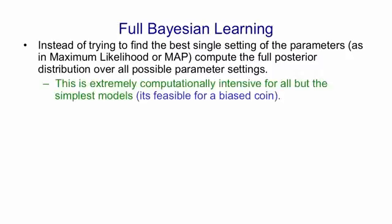It's extremely computationally intensive to compute this for all but the simplest models. So in the example earlier we did it for a biased coin which just has one parameter which is how biased it is. But in general for a neural net it's impossible.